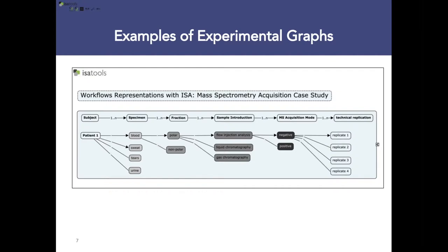We represent the experimental graph as a JSON document or tab-delimited file. Here I'm showing the example of a graph for mass spectrometry acquisition, where different specimens are derived from a patient. Blood, for example, would be fractionated into polar and non-polar fractions, with different injection modalities, different acquisition modalities, and one or more replicates for each step. This is what we want to make sure people capture in accurate detail. However, these steps can be time-consuming to do manually, so we'd like to bootstrap some of that.